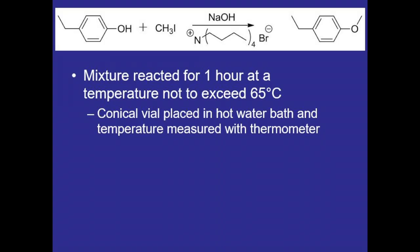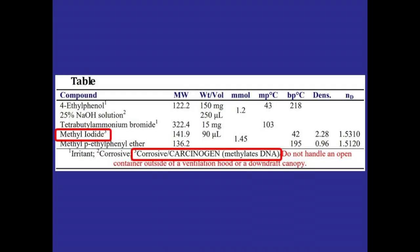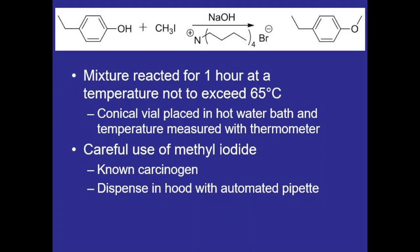Now when setting up the reaction, we want to be really careful with methyl iodide. It's a known carcinogen, and if you look at the table at the safety issues, you can see it's corrosive, and it's a carcinogen because it methylates DNA. So when adding it to the conical vial, it'll be dispensed in the hood using an automated pipette, and we'll make sure to keep the cap on the container whenever we're not using the methyl iodide.